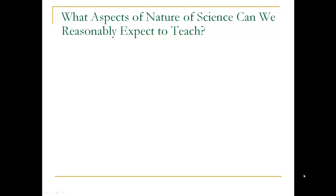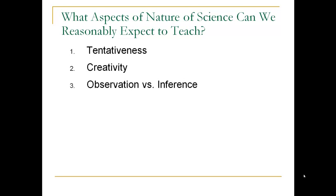Let me give you some examples — aspects of nature of science that might help you understand a little better. There's tentativeness, that scientific knowledge is subject to change. Creativity, that because human beings are doing it, it necessarily involves imagination. There are also observations, and these observations lead to inferences. These inferences are based upon those observations, so distinguishing between the two is important. And there's subjectivity — the background and unique differences between scientists are in part the reason why two scientists can look at the same data and yet come to different conclusions.